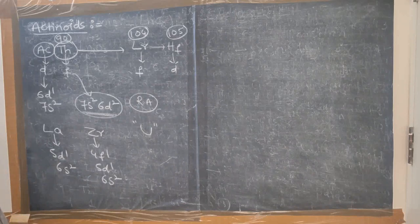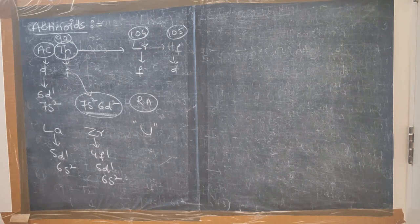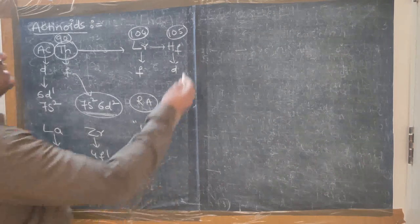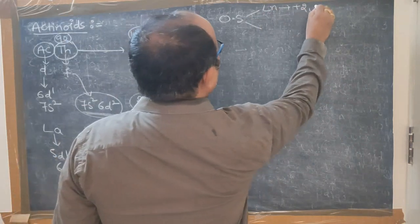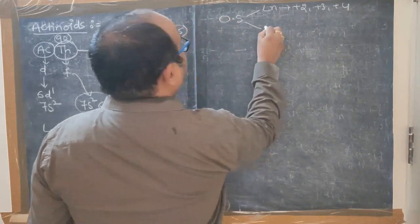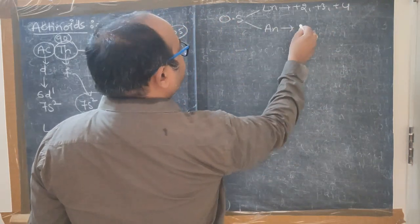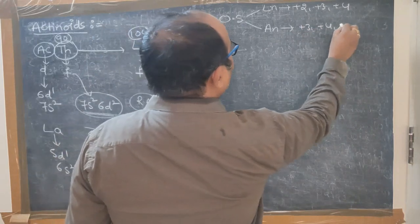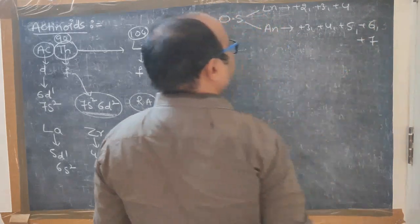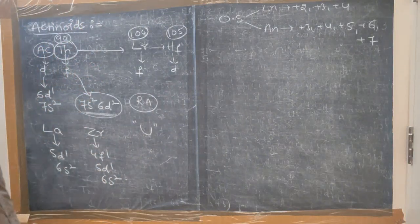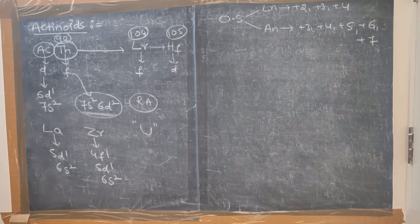Regarding colors, magnetic property, atomic radius — everything is similar to that of lanthanides. The common oxidation state for lanthanides is +2, +3, +4, but actinides show +3, +4, +5, +6, and +7, though the common oxidation state is +3 only.